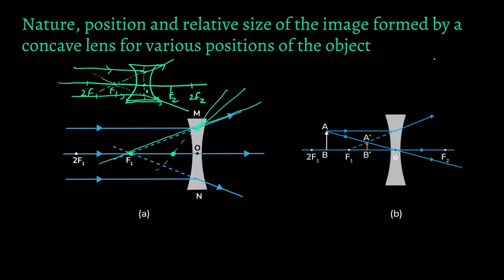The second case is when the object is kept between 2f1 and f1. Like in a convex mirror, there are only two cases: object at infinity, and object anywhere between the pole and infinity. In a concave lens, similar to a convex mirror, both have only two cases. A convex mirror is a diverging mirror, but a convex lens is a converging lens — they are opposite for mirror and lens.